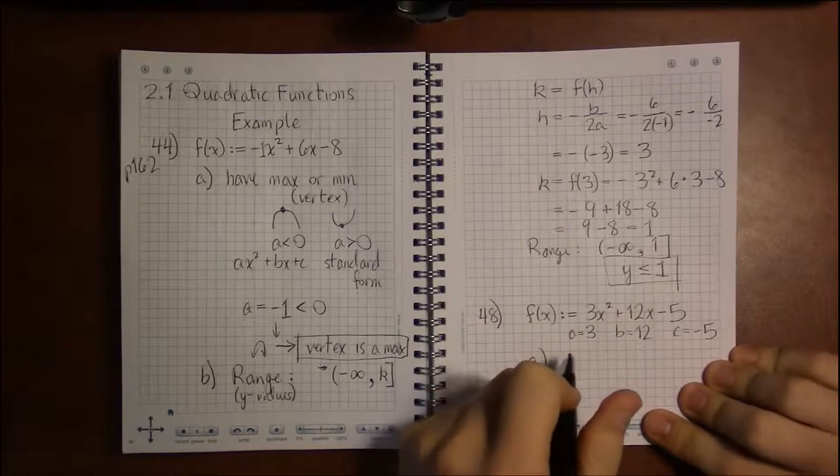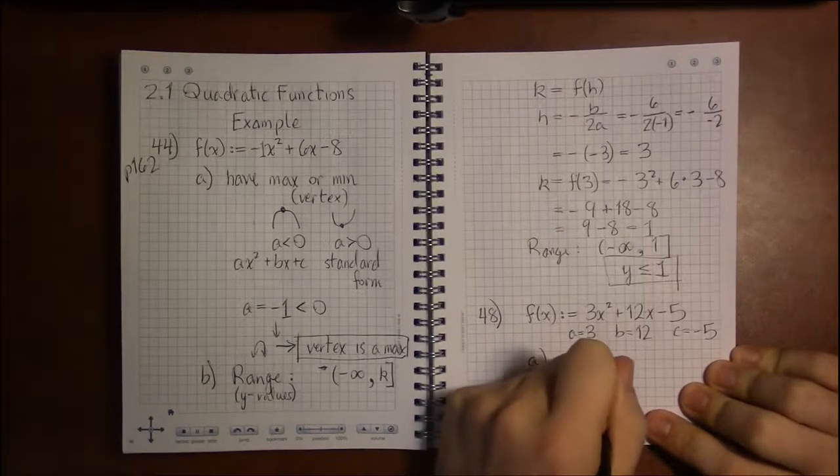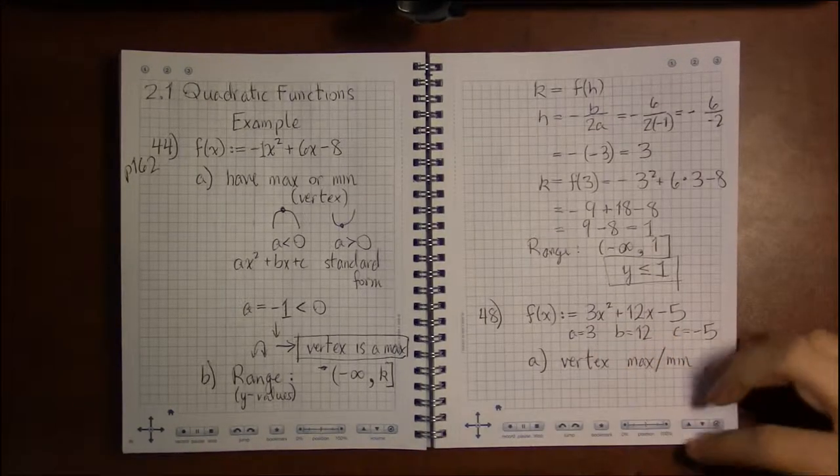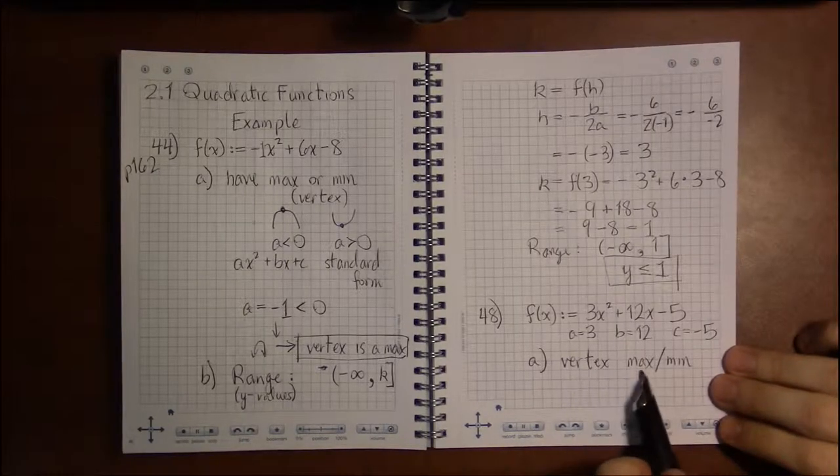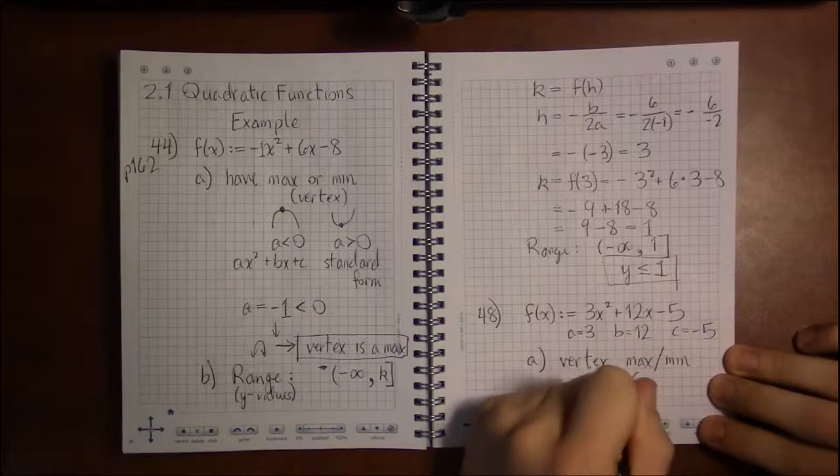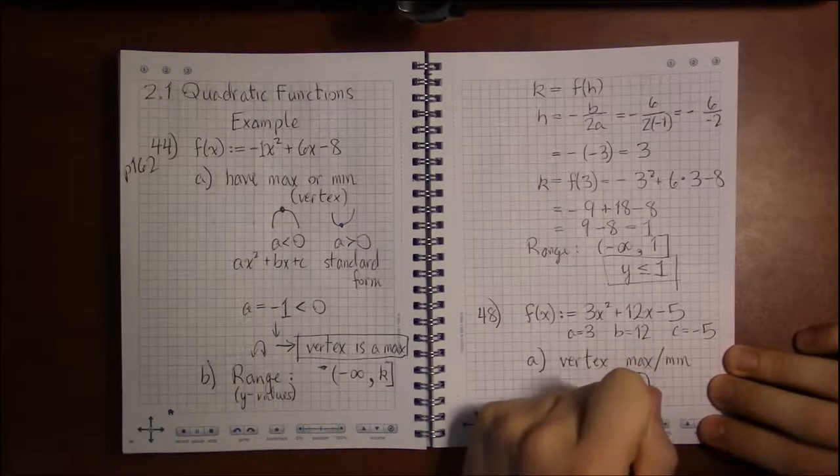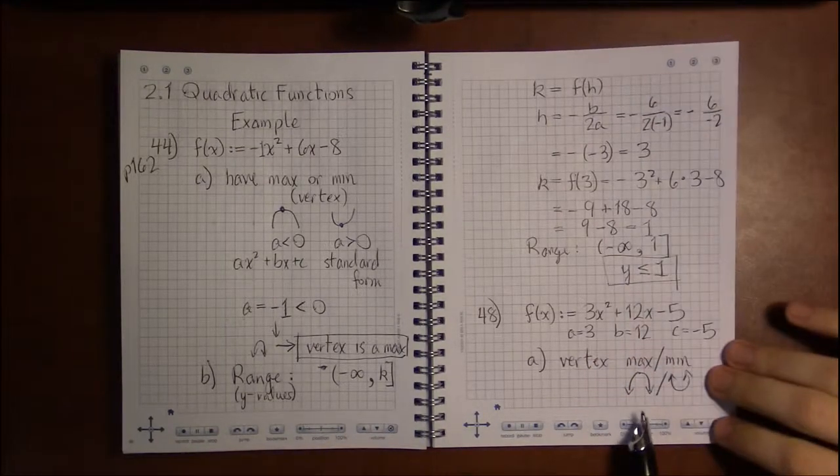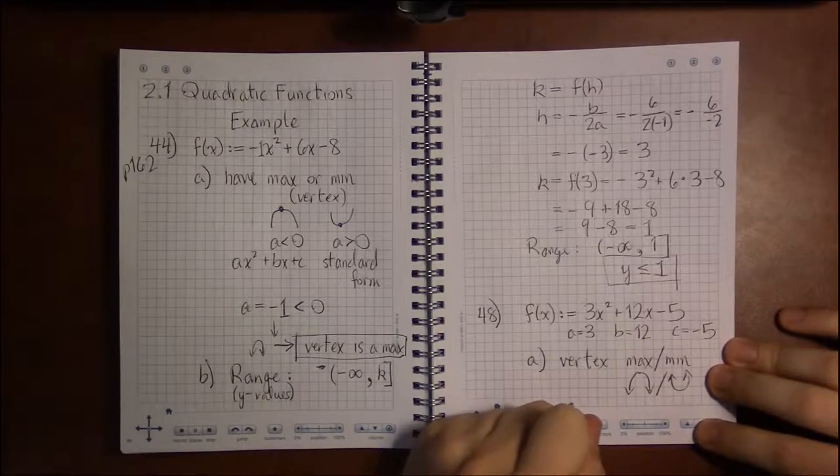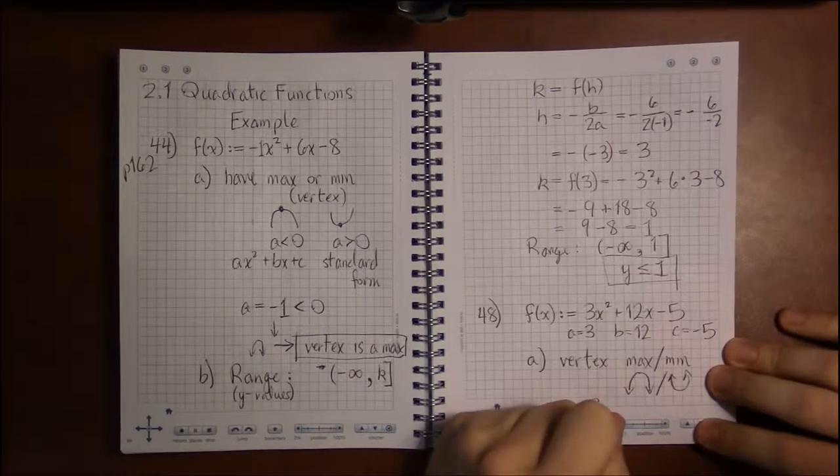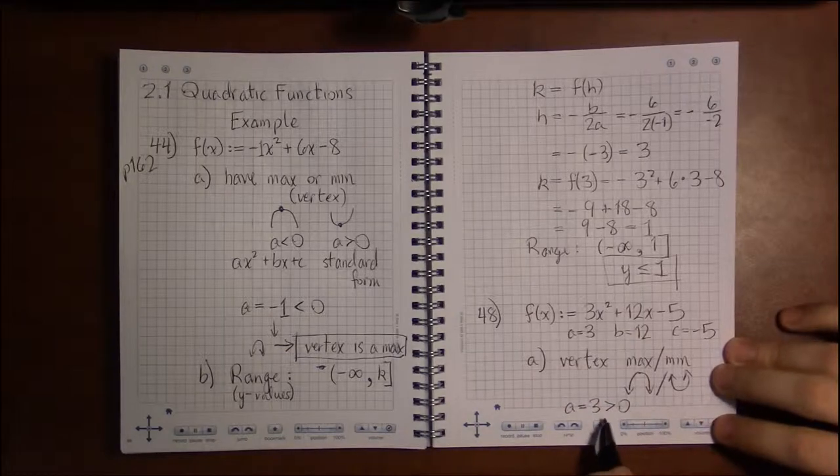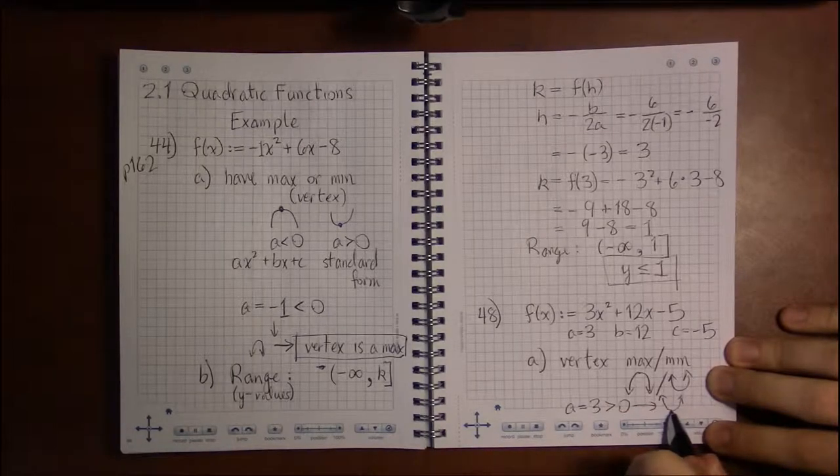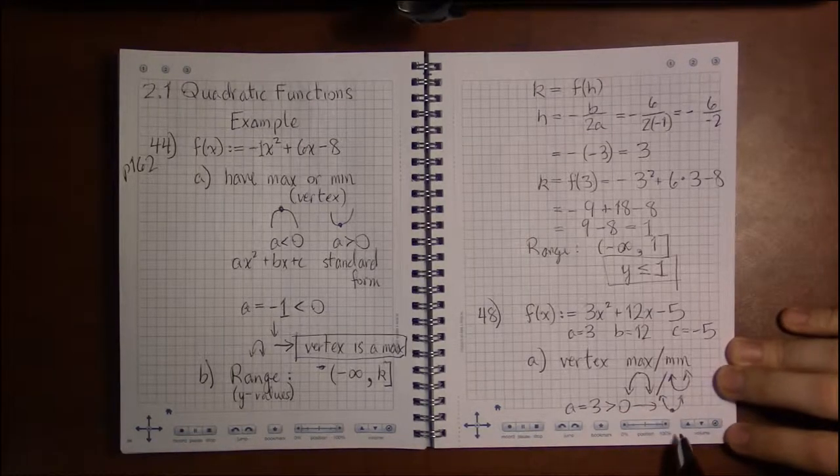In order to tell whether the vertex is a max or a min, we need to look at a, because whether the vertex is a max or a min is whether or not the graph opens down or opens up, and that's determined based on the sign of a. Since a in our case is 3, and 3 is positive or in other words greater than 0, the graph will open up, which means the vertex, the extreme value, will be a minimum.